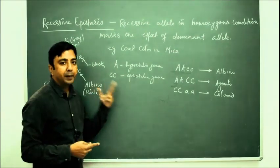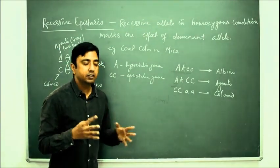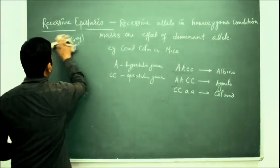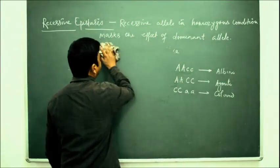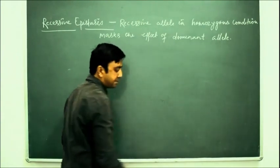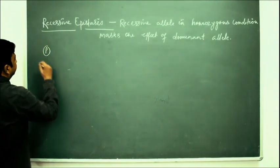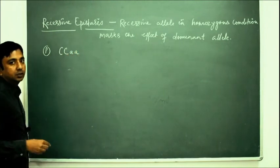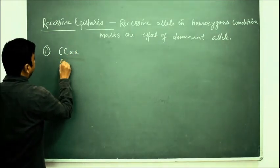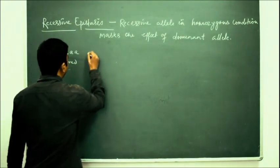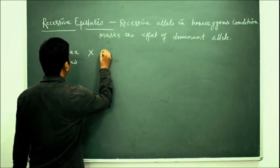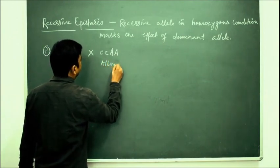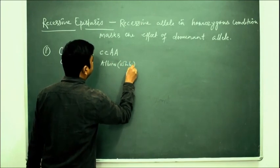After that we will take two parents — one is colored and the other is albino — and we will see the cross. We take a parent capital C capital C, small a small a, so the coat color would be colored. It is crossed with a parent having small c small c, capital A capital A, which will be albino. Albino is generally white in color.